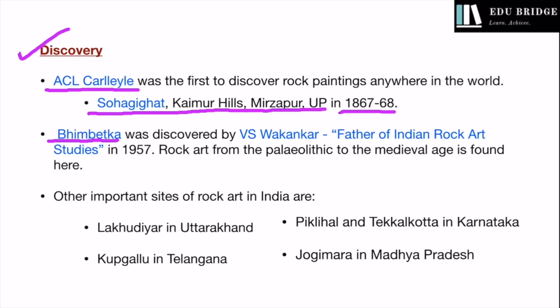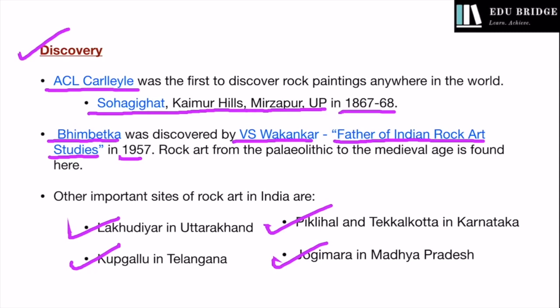The next important site is Bhimbetka. Bhimbetka is synonymous with Indian rock painting and is considered to be the most iconic of all Indian rock painting sites. It was discovered in 1957 by archaeologist V.S. Wakankar, and for his contributions to the science, he is considered as the father of Indian rock art studies. Bhimbetka was occupied continuously for a period of 1 lakh years, from the Paleolithic right up to the medieval age, with a continuous tradition of painting. Some other mention-worthy sites include Lakhudiyar in Uttarakhand, Peklihal and Tekkelkota in Karnataka, Kupgallu in Telangana, and Jogimara in Madhya Pradesh.